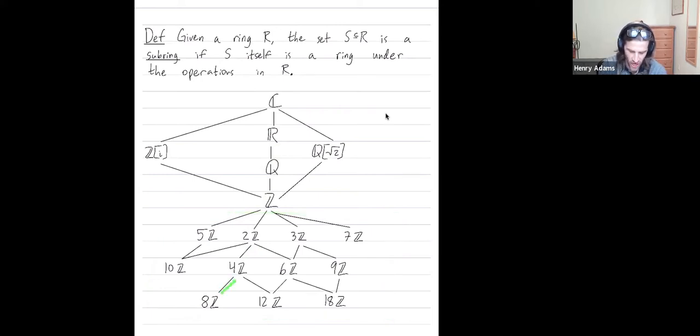And whenever there's sort of a line going up from one subring to another, that means not only is 8z a subring of 4z, but 8z is also a subring of z. So let me talk about the sort of lattice of subrings. This is by far not complete. You could draw in many, many other subrings that are not in this picture.